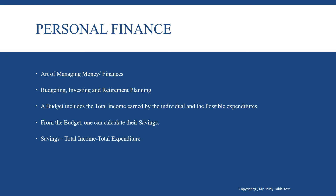Coming to the concept of personal finance — in simple words, it means the art of managing money or finances, either for an individual or for a family. It consists of budgeting, investing and retirement planning. A budget includes the total income earned by the individual and the possible expenditures for a certain period of time. Usually for a household, a monthly budget is created. From the budget, one can calculate their savings — savings is the residual amount you get after deducting total expenditure from total income.